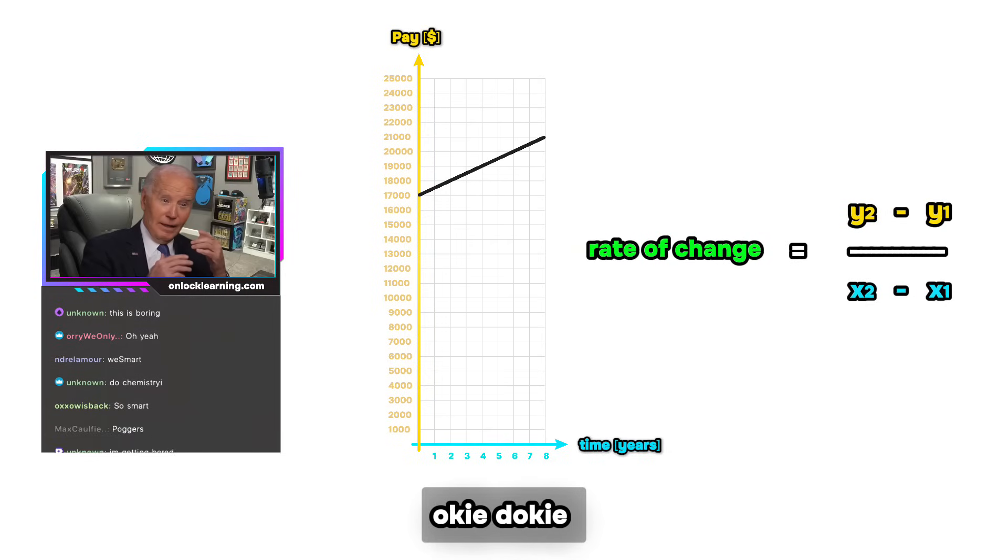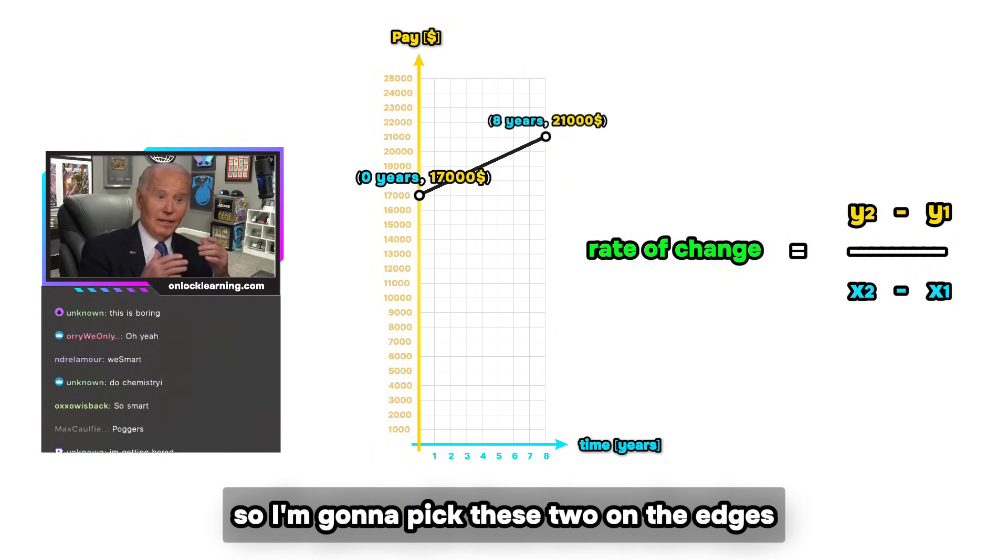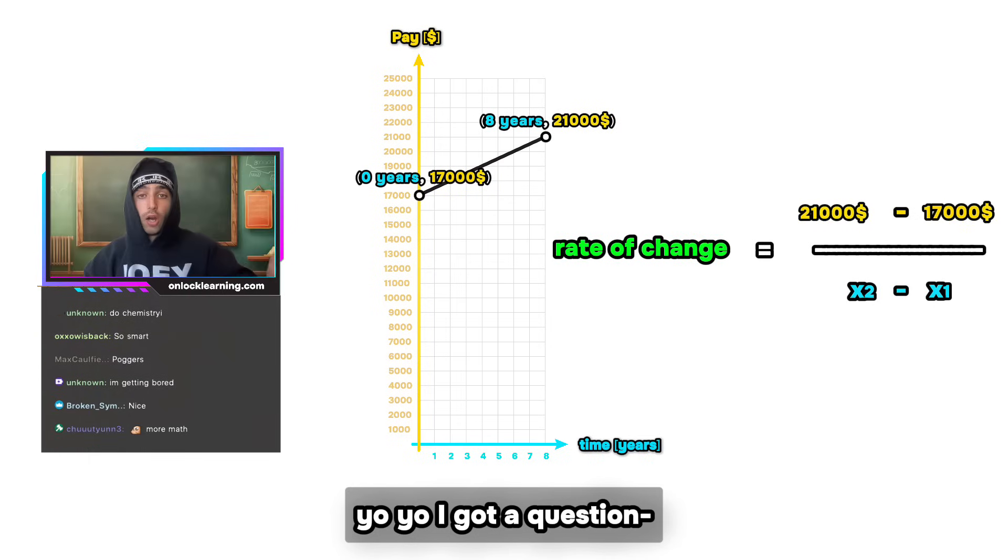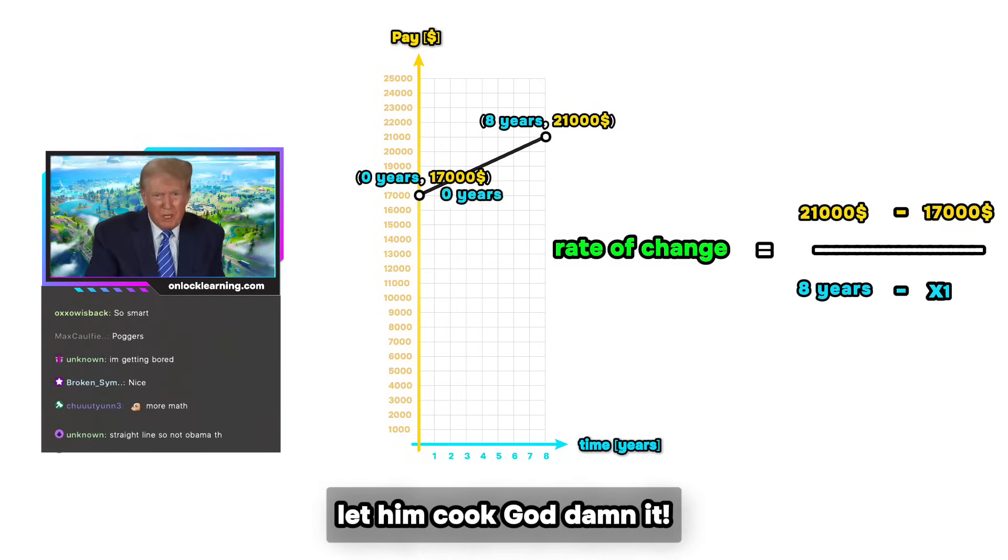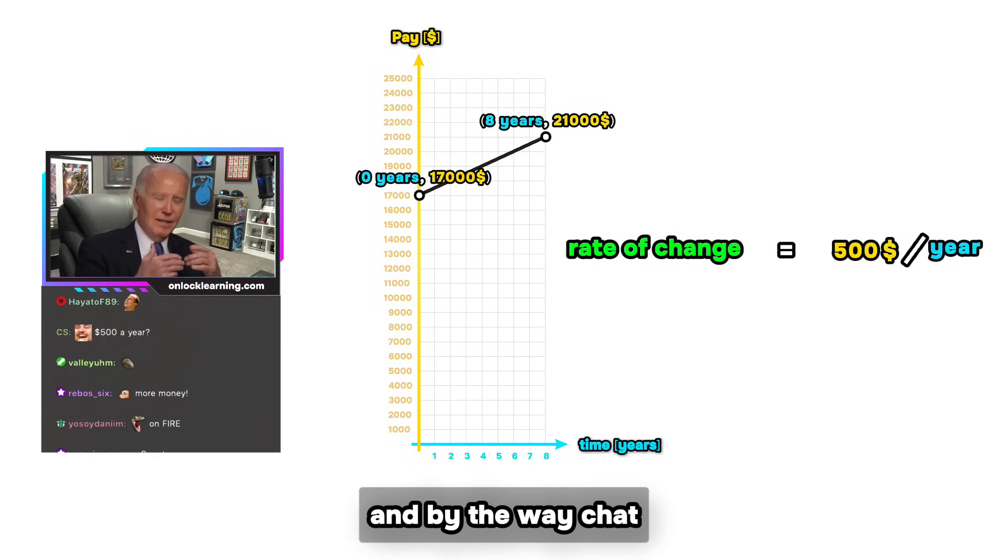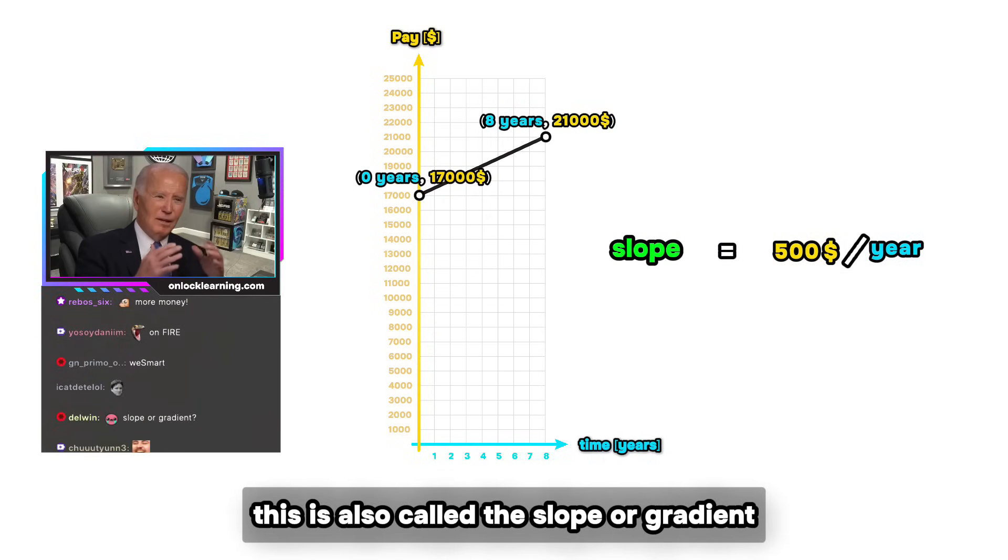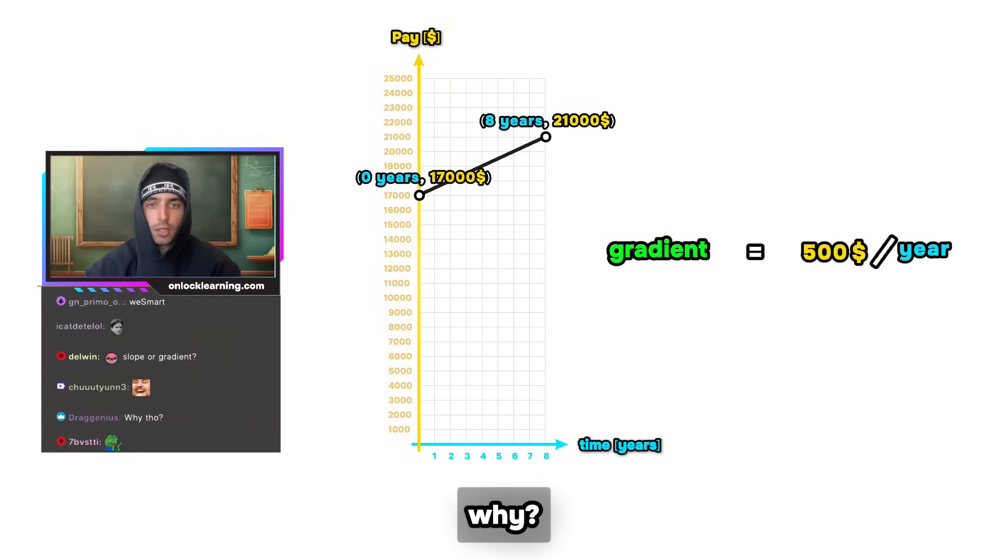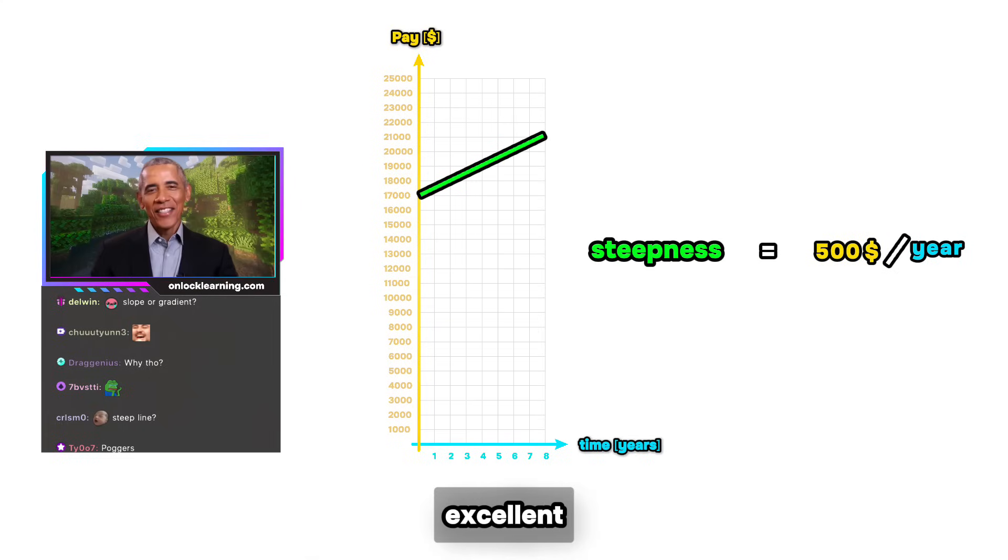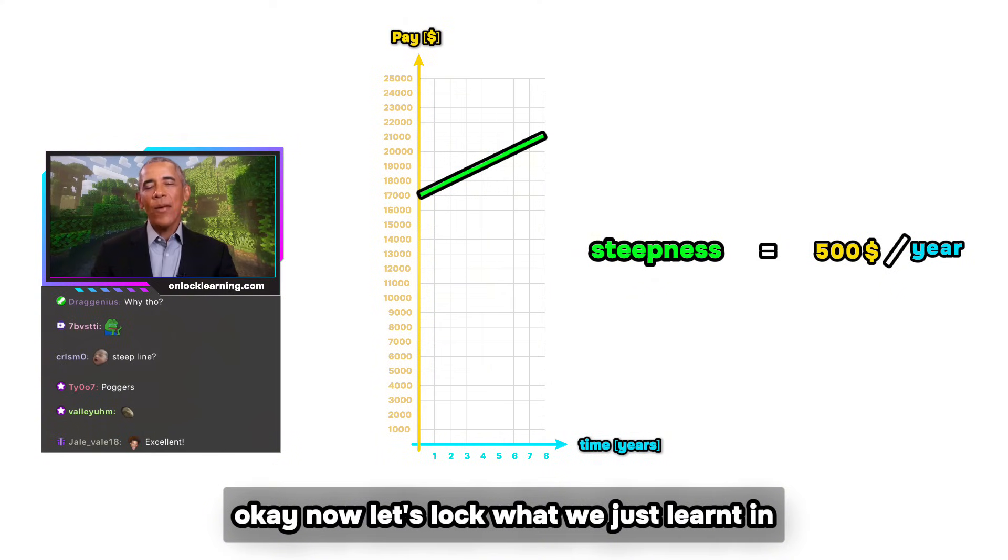Okey dokey. So I'm gonna pick these two on the edges, then do this pay minus this pay. Yeah, yeah, let him cook, god damn it. This time so, do that and you get 500 per year again. You're on fire Joe. And by the way chat, this is also called the slope or gradient. Why? Because all of this really just comes down to finding how steep this line is. Excellent.